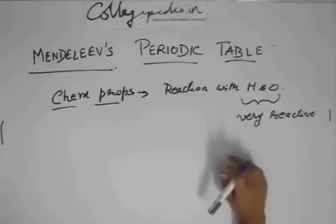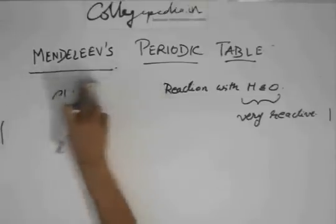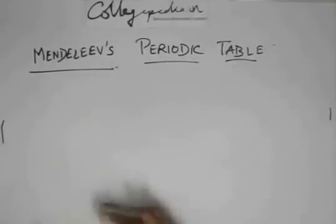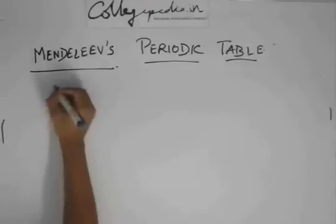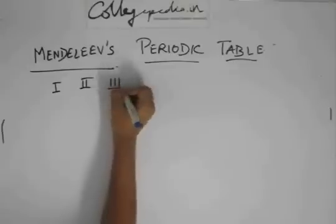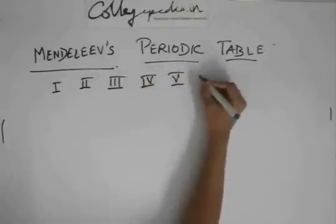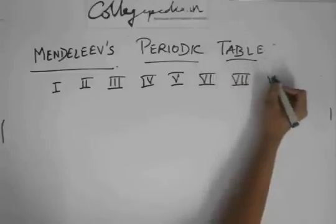So using this, he created his periodic table, which also contained groups and periods. The groups were 1, 2, 3, 4, 5, 6, 7, and 8.